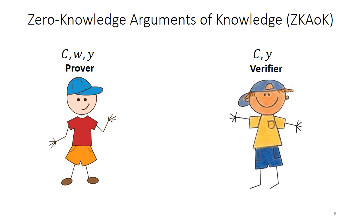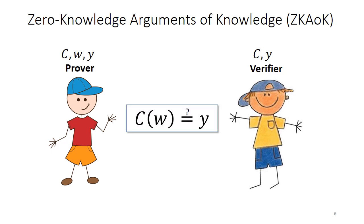More concretely, let's assume that the prover and the verifier both know a circuit C and an output Y of the circuit, and moreover, the prover has a witness W and wants to convince the verifier that it knows this W and that C applied to W outputs Y. The whole construction is called an argument of knowledge because we assume that the prover is computationally bounded.